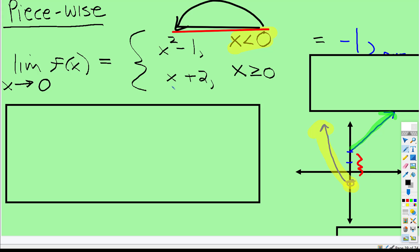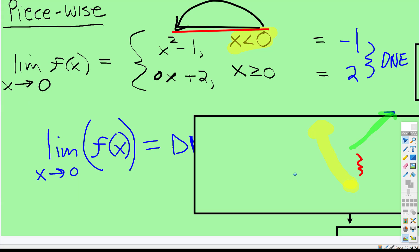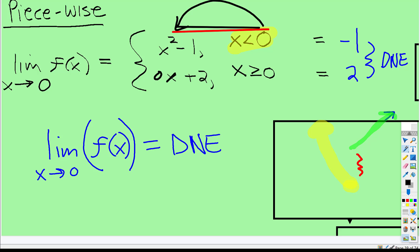And then if you plug zero into this function, zero plus two is two. When those heights do not agree, you know right away that the limit will not exist.